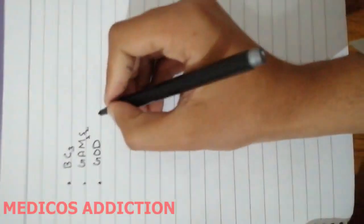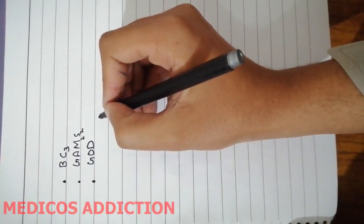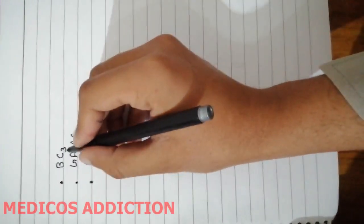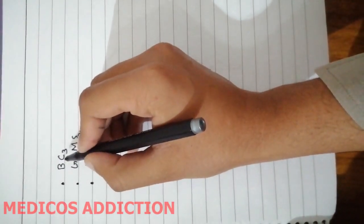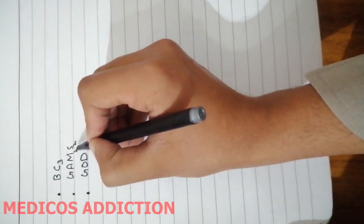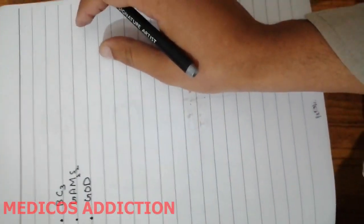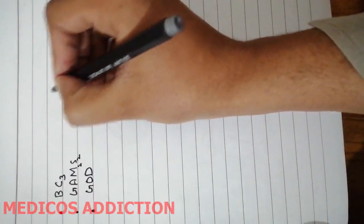With just memorizing three words, we can remember all the derivatives of neural crest cells. The first word is BC3, second is GAMES written as M2S2, and third word is GOD. Now we will see the structures.